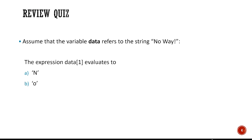Here's a review quiz on strings as a data structure. We have a variable that refers to the string 'no way'. The expression data[1] evaluates to which option? We can access each character by its position — the first character's position is zero, the next is one. So data[1] evaluates to 'o'. The right answer is option B.